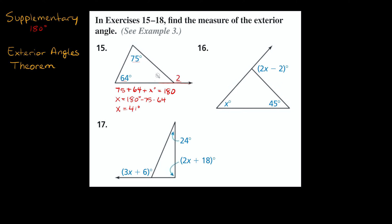So we just figured out that this angle is 41 degrees. Now, the 41-degree angle and this exterior angle out here are supplementary, so they add up to 180 degrees. Let's label the exterior angle Y. So 41 plus Y equals 180. Subtracting 41 from both sides, we get Y equals 180 minus 41, which equals 139. So this exterior angle is equal to 139 degrees.